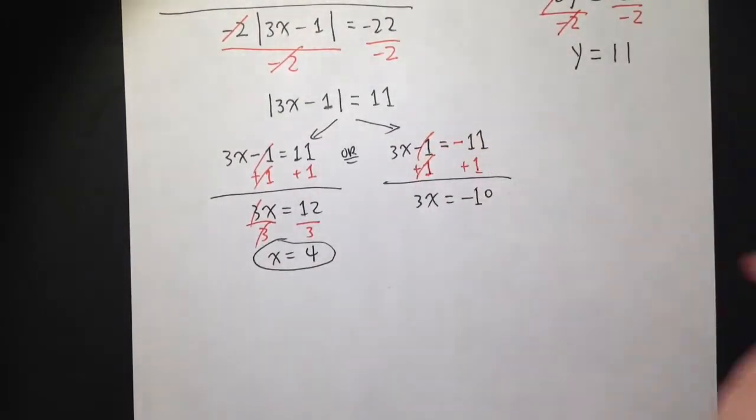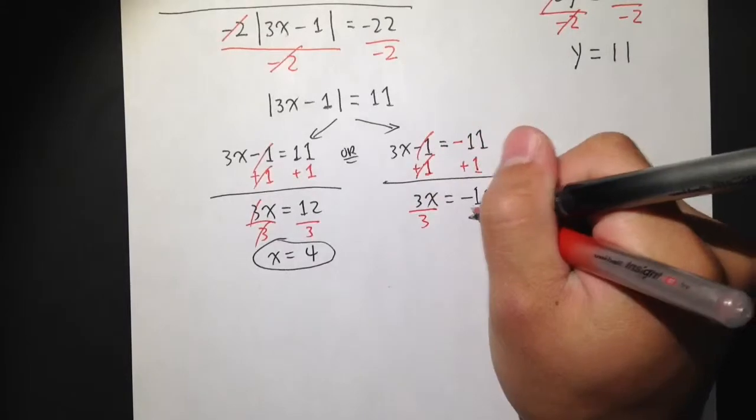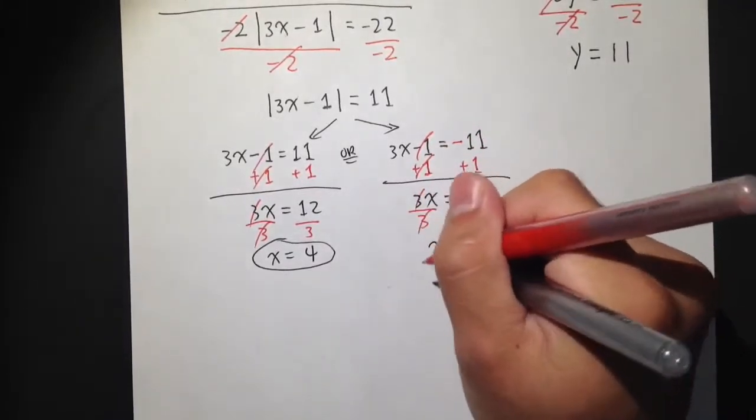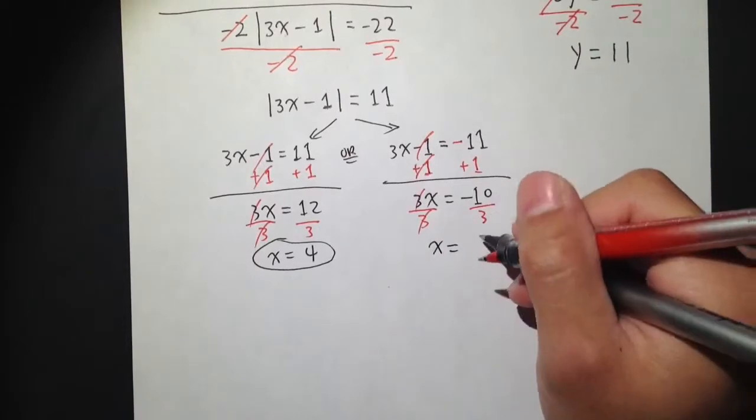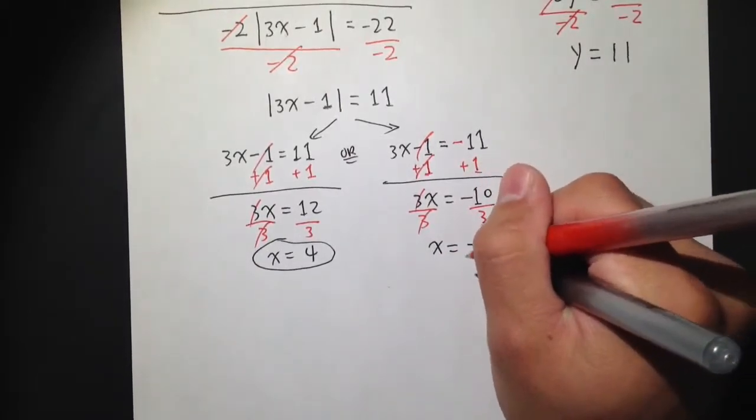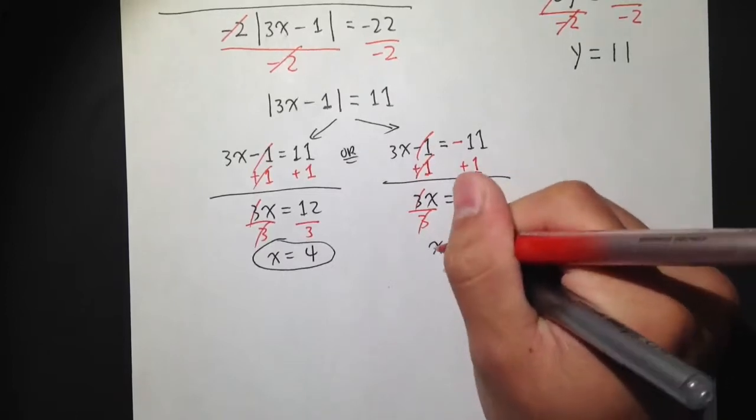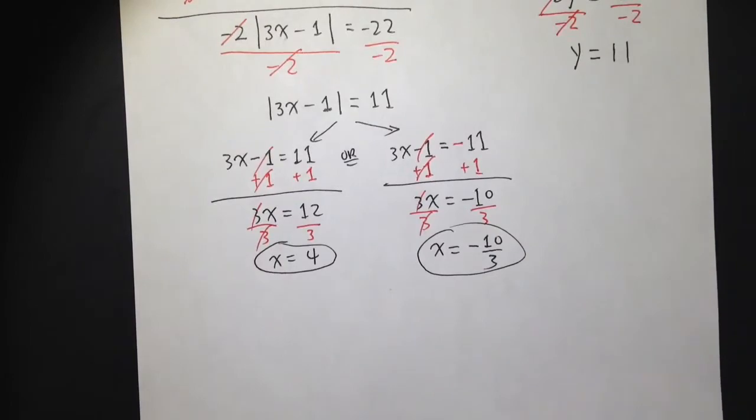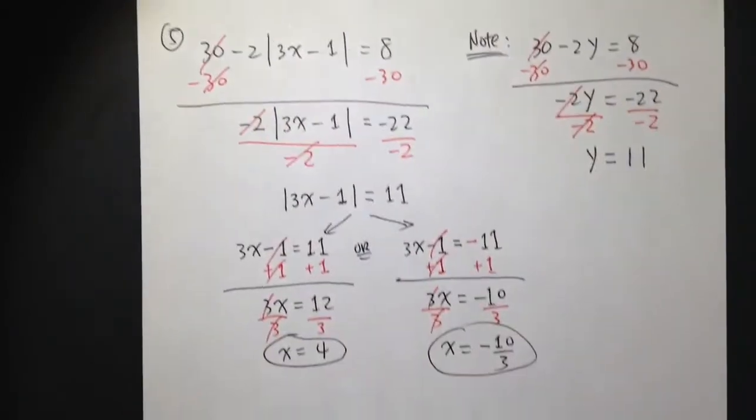And then we can just divide both sides by 3 like this. 3 cancels. We get x is equal to negative 10 over 3. We cannot reduce it, so we can just write this as negative 10 over 3. Second solution. Two solutions for this question.